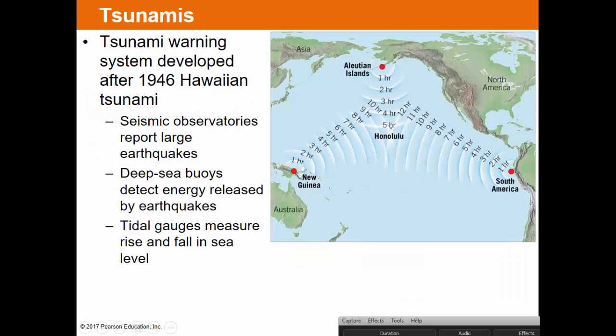An earthquake in the Aleutians can create a tsunami that reaches Honolulu in about 10 hours; from South America it's about 12 hours; from New Guinea about 10 hours. Hawaii is in the bullseye of many tsunami possibilities and experienced a terrible tsunami that wiped out Hilo on the Big Island with no warning. The tsunami warning system was developed in 1946, and it can now typically give several hours of warning before tsunamis arrive.